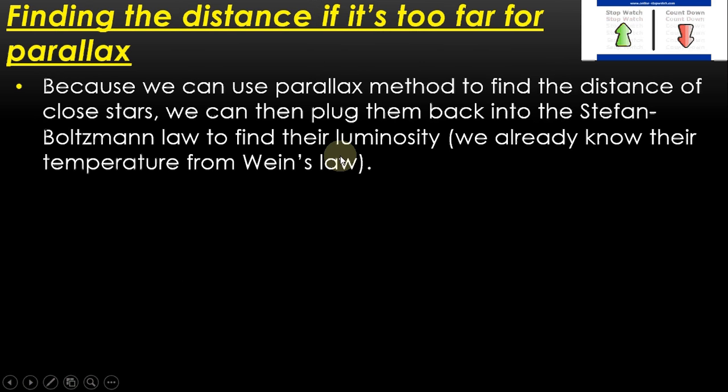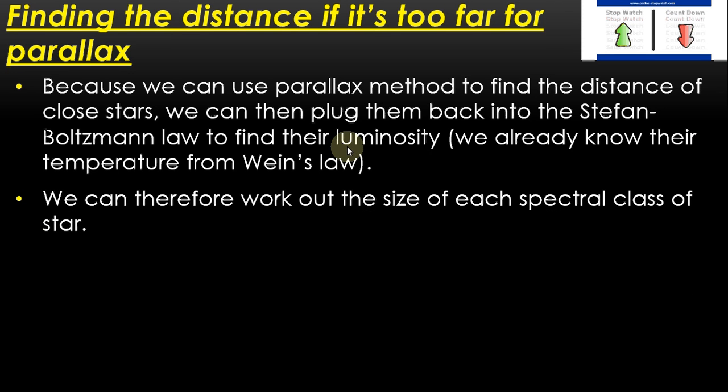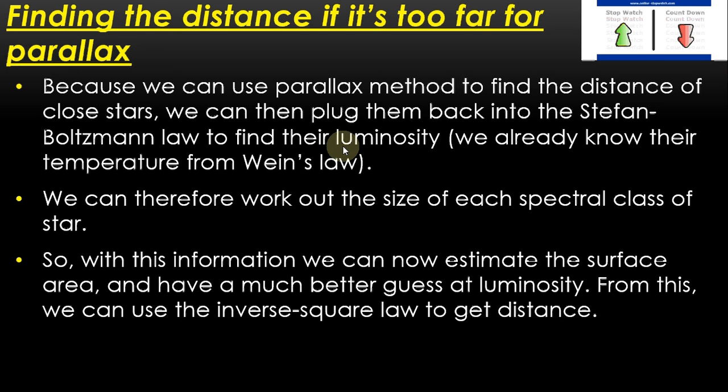So thinking back to the last lesson, that then means that we can now use the parallax method to find the distance of our close stars. Then we've got a definite understanding of the distance, we know it's right, so we can plug that into the Stefan-Boltzmann law. If we plug that into Stefan-Boltzmann's law, we can find their true luminosity. Now Wien's law is pretty good, we know their real temperature. Now what that means is we can work out the size, the area of each spectral class of star. And that's very important because with that information, we can now give a really good idea of the surface area, and thus luminosity, for stars that are too far away.